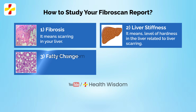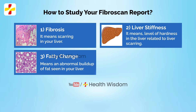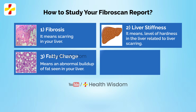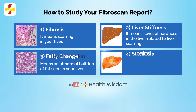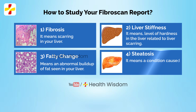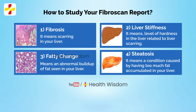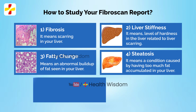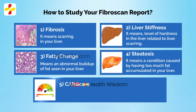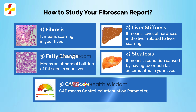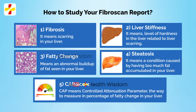3. Fatty change: means an abnormal buildup of fat seen in your liver. 4. Steatosis: it means a condition caused by having too much fat accumulated in your liver. 5. CAP score: CAP means controlled attenuation parameter — the way to measure the percentage of fatty change in your liver.